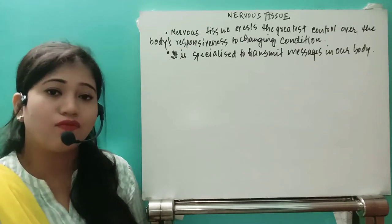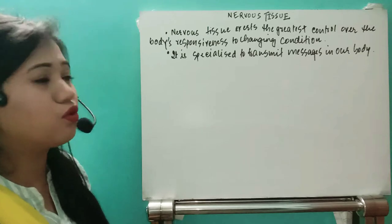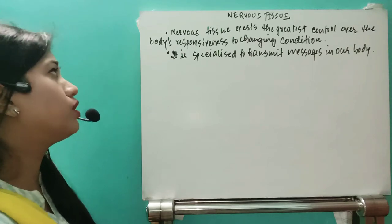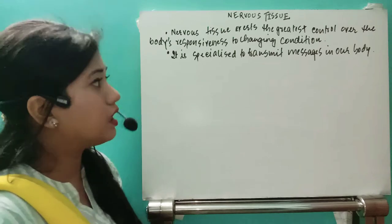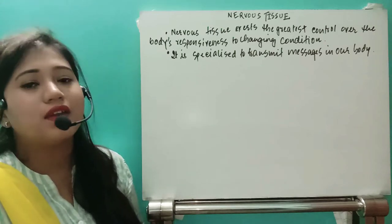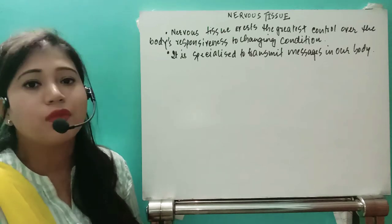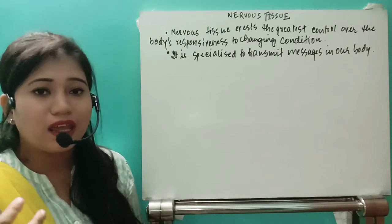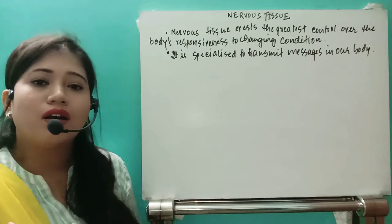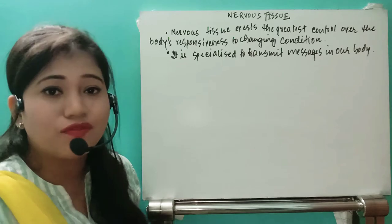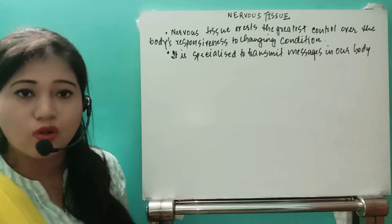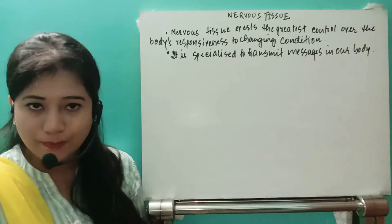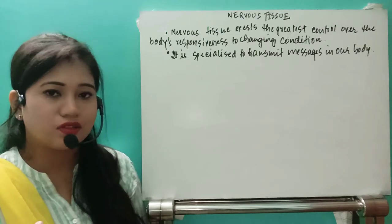The first important point about the nervous system is that nervous tissue exerts the greatest control over the body's responsiveness to changes in condition. For example, suppose you're watching a video — how can you watch it? Our eyes are able to see and give us information about letters, words, and pictures. This is possible because of the nervous tissue and the eye.